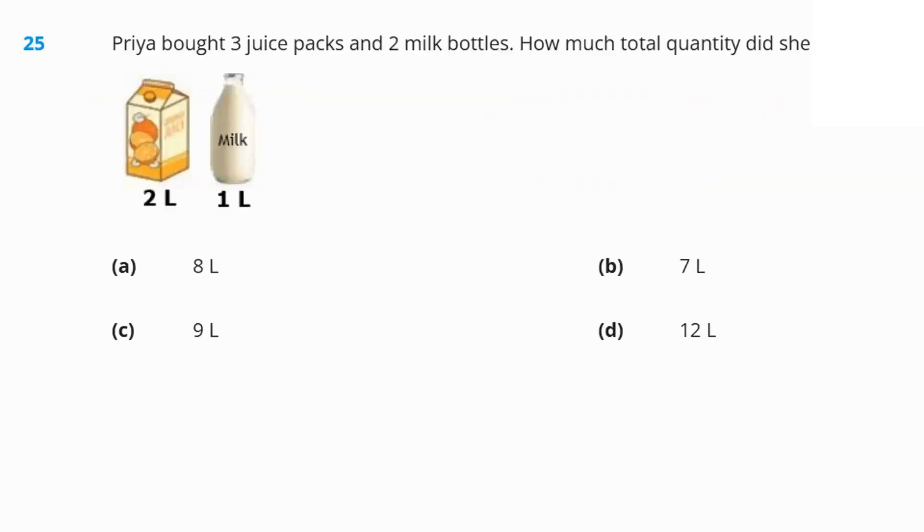Next question. Priya bought 3 juice packs and 2 milk bottles. Total quantity. 3 packs of juice means 3 into 2, 6 liters. And 2 milk bottles means 2 into 1, 2 liters. 6 plus 2, 8 liters. Option A is the answer.